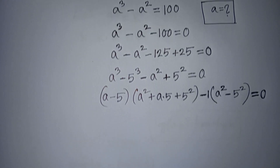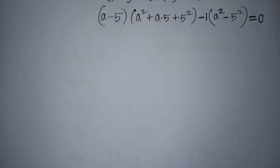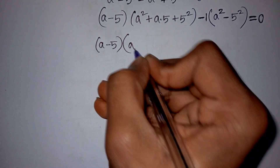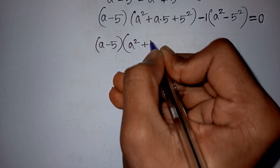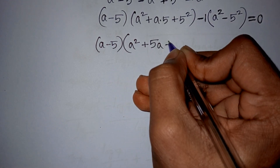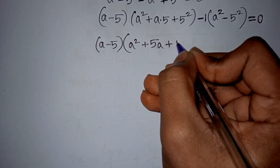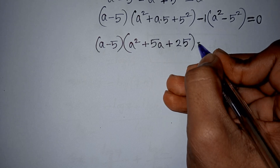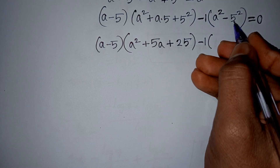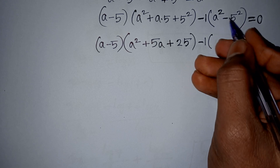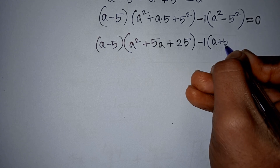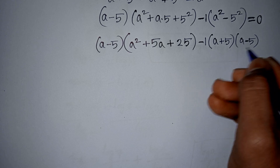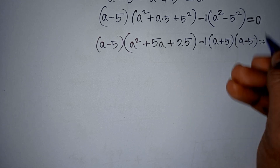Now, we have bracket (a minus 5)(a² plus 5a plus 25), then bracket close minus 1 multiplied by (a² minus 5²). Compare with the formula of a² minus b², so it will be (a plus 5)(a minus 5), that means (a plus b)(a minus b). Then equal to 0.